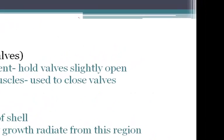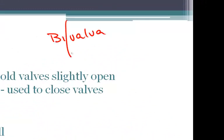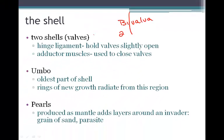The prefix 'bi' means two, so bivalves have two shells, or two valves. There's a hinge ligament that holds the valves slightly open, and adductor muscles that are used to close the valves. The umbo is the oldest part of the shell, and new rings of growth radiate from this region. Pearls are produced as the mantle adds layers around an invader — a grain of sand or a parasite. Those layers eventually become condensed and produce pearls.